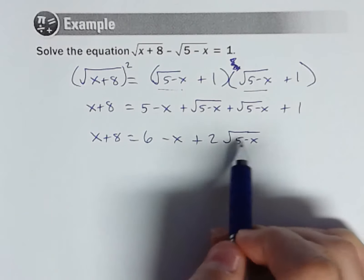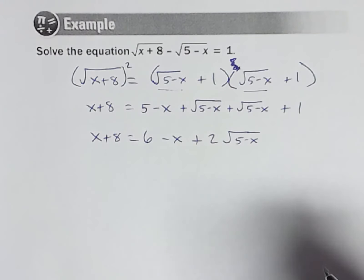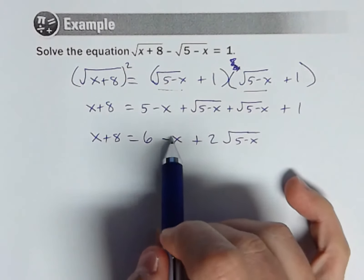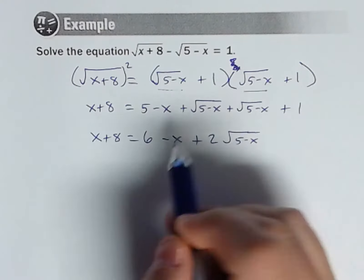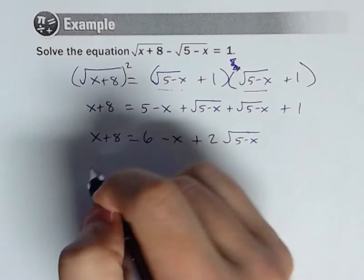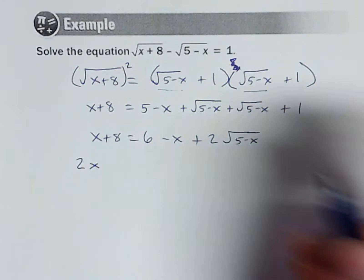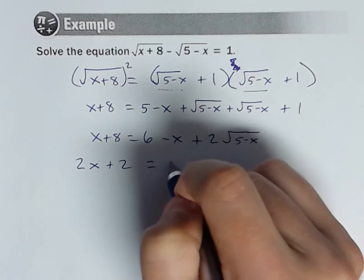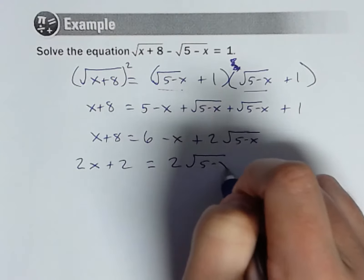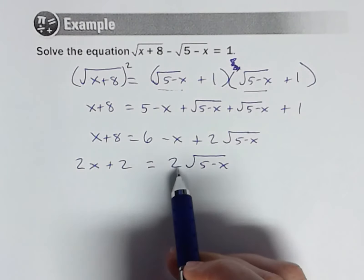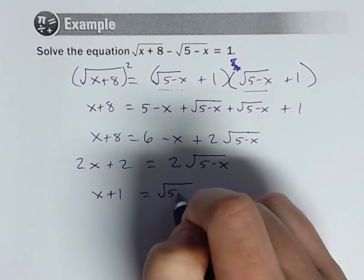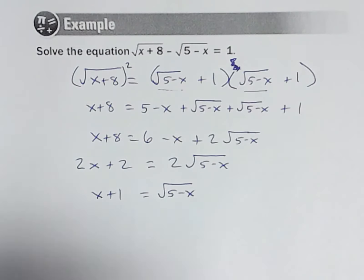So we still have a radical, so now we just start over. Isolate the radical, square both sides. So we want to get this by itself. So let's go ahead and bring things over here. So if I subtract my 6, add my x, so I get 2x. What do we got? Plus 2 equals 2 square root of 5 minus x. Let's divide by 2 on both sides. So I get x plus 1 equals square root of 5 minus x.